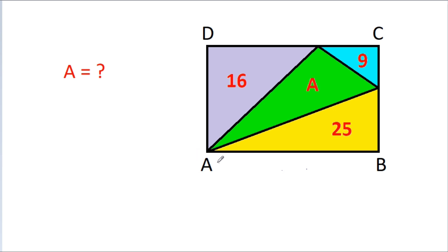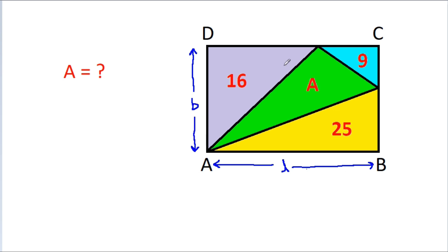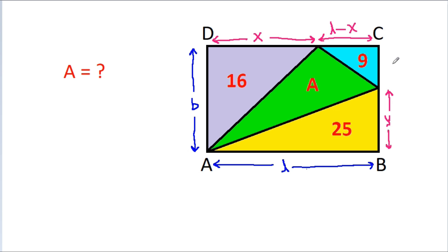Let's assume the length of the rectangle is L and the breadth is B. If we assume this length is X, then the opposite side is L minus X. Similarly, if this length is Y, then the opposite side is B minus Y.